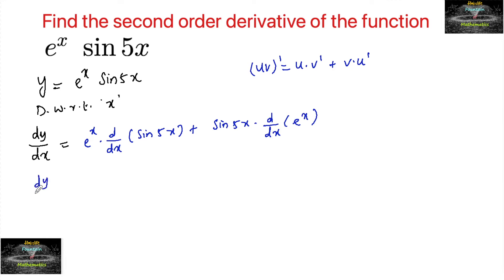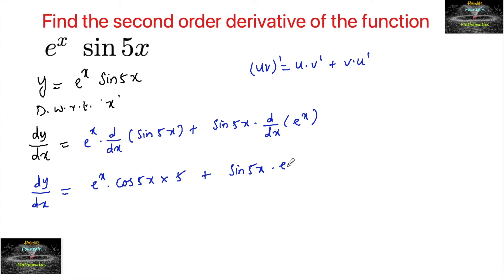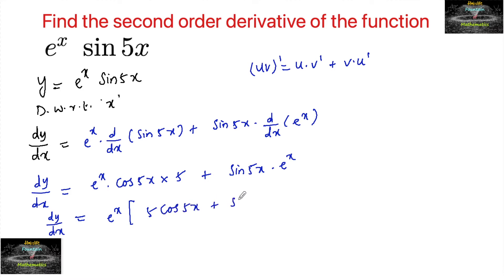So we have dy by dx is equal to e power x into the differentiation of sin 5x, which is cos 5x, multiplied by the differentiation of 5x which is 5, plus sin 5x into the differentiation of e power x which is e power x. Taking e power x common, dy by dx is equal to e power x times 5 cos 5x plus sin 5x.